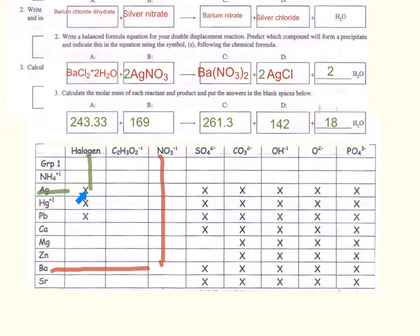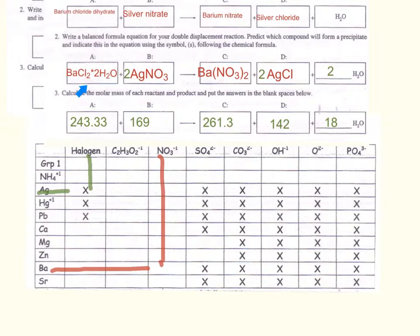Looking at silver: chlorine is a halogen in group 17 of the periodic table. Following across, we see that silver chloride would be soluble, so that is not the precipitate. Following barium across to nitrate, we see that barium nitrate forms the precipitate — those with no X on the chart. So we need to calculate how much barium chloride dihydrate and how much silver nitrate to mix together to make 2 grams of barium nitrate. Note that this is just one of many solubility tables available online.